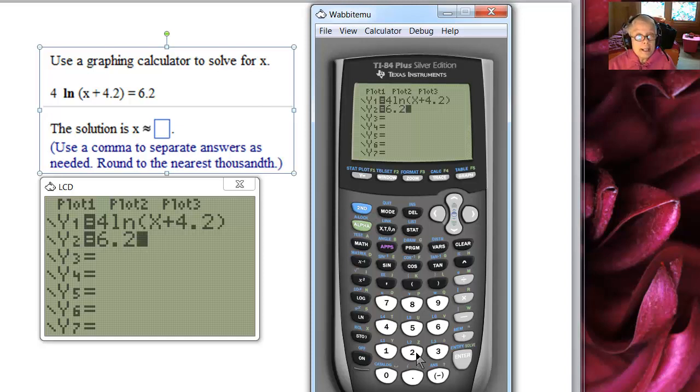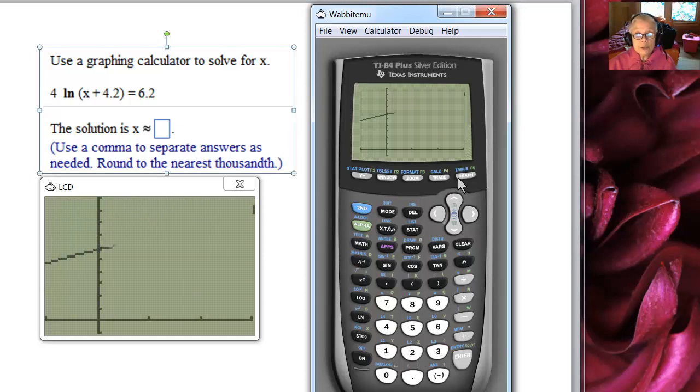Now our answer is going to be the x coordinate of the point of intersection. So we're going to go to second trace. Well, first let's graph it and take a look.